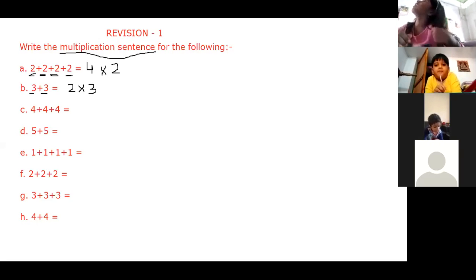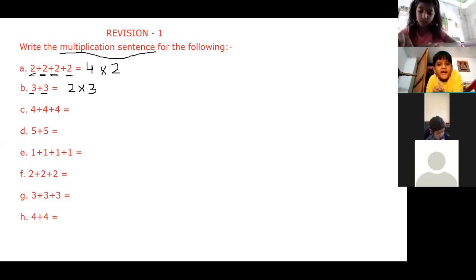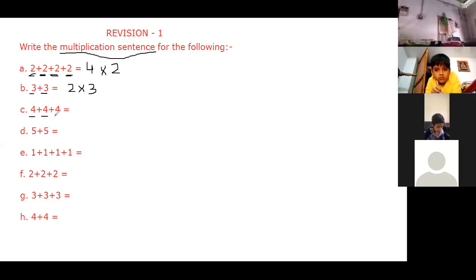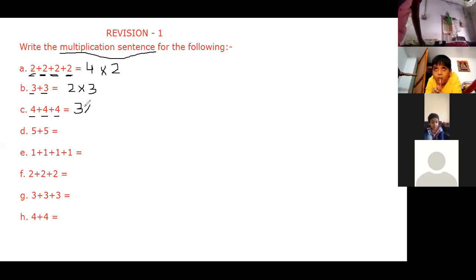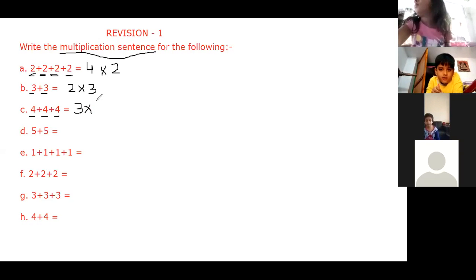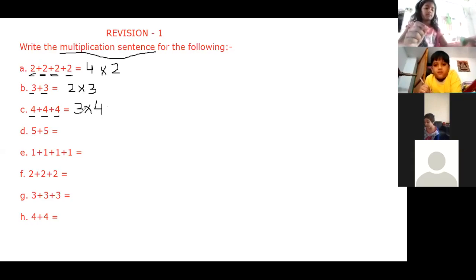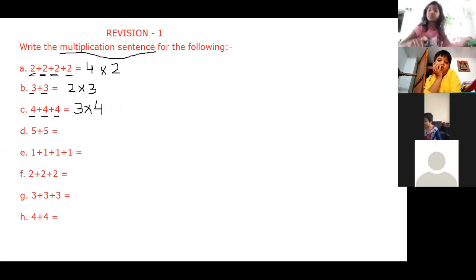Now Vineet, in the third bit, how many times are we repeating? Three. Very good. In the third bit, we are repeating the number one, two, and three times. So we will write here three. After that, what we will write, Vineet? Multiplication symbol. And which number is being repeated? Four. So we will write here number four. We will read it as three multiplied by four.